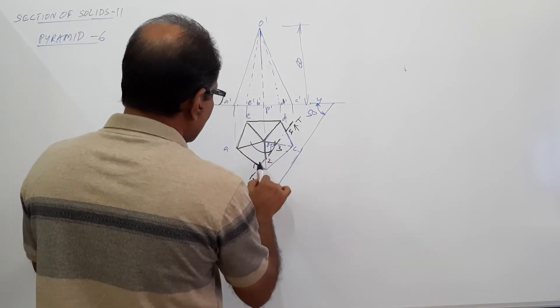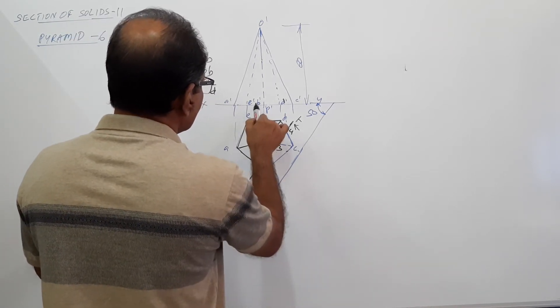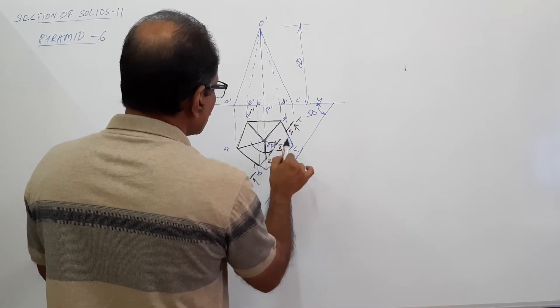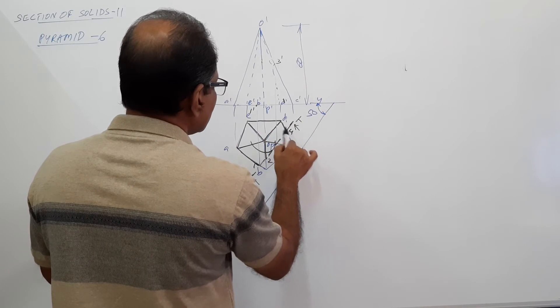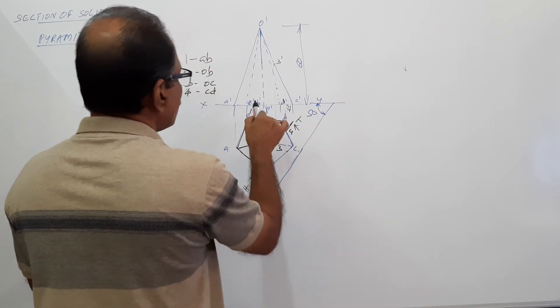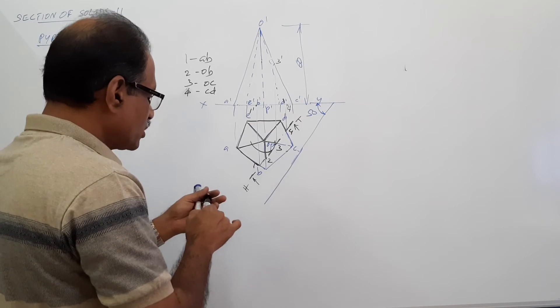Project it. 4 dash, project it. 4 dash, 1 dash, 3 dash, 4 dash. What about 2?